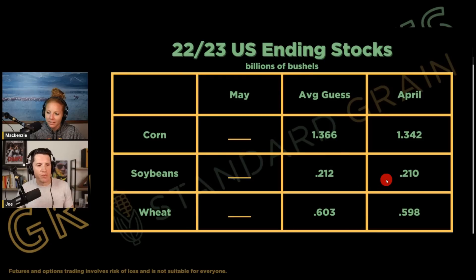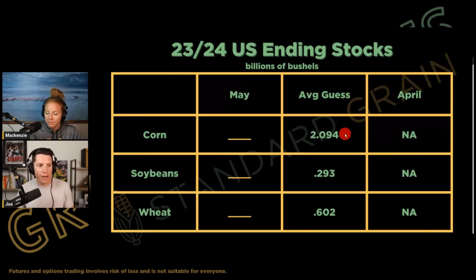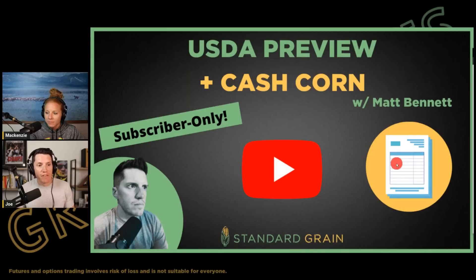When you look at some of the carryout estimates, the market is expecting a U.S. corn carryout number for this marketing year of 1.366 billion bushels, but the market is trading a 1.5 or higher. In my opinion, the export number has to come down and the ethanol number has to come down. When you look at new crop, this two billion bushel carryout that they're expected to print for corn is not a good look — kind of a bearish look, certainly. Yesterday I had Matt Bennett on and we did a more detailed look at the USDA report and some of the things we're thinking about ahead of the report.